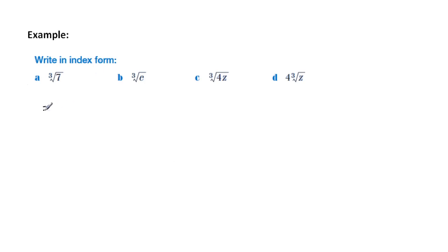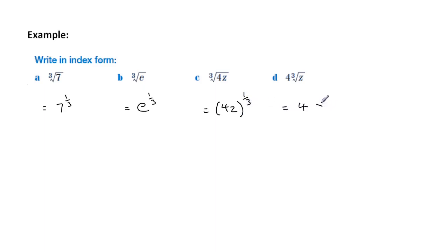Writing these in index form: the cube root of 7 would be 7 to the third, the cube root of e would be e to the third. The cube root of 4z would be 4z to the third. Whereas in the other expression, the 4 is separate from the cube root, so the answer is 4 and only z is to the third — we can drop the times sign and write it like that, but remember the 4 is not to the third, only the z.